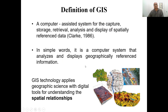GIS is a computer-assisted system for capturing, storing, retrieving, analyzing, and displaying spatially referenced data. In simple words, it is a computer system used to analyze and display geographically referenced data. This technology helps us understand various spatial relationships, which is essential to solving many environmental and data problems.